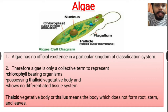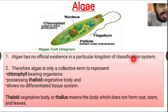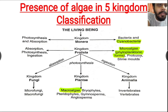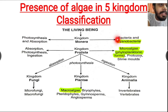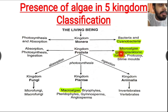Algae has no official existence in a particular kingdom of the classification system. In the five kingdom classification system, algae doesn't have a separate kingdom. They are placed in different kingdoms — in Monera, the prokaryotic algae, that is the cyanobacteria or blue-green algae, is present.